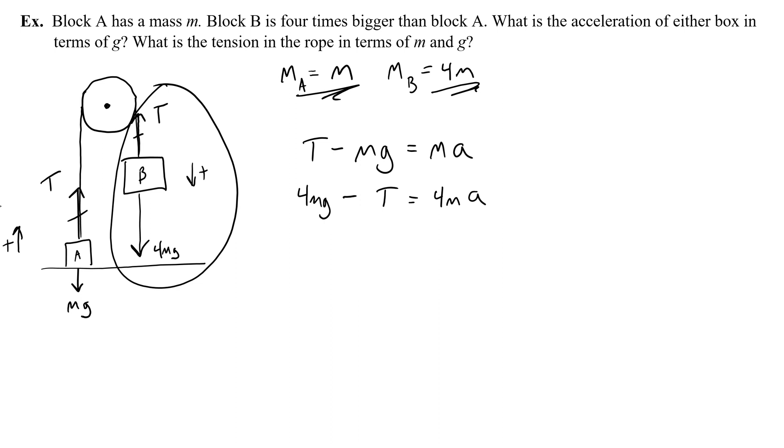So what do I do? Well, I want to find the acceleration, right? So that means I'm just going to keep chugging along and solve for A. So I solve this system by adding the left and the right sides of the equations, tension cancels, and I get 4MG minus MG equals MA plus 4MA. Now you can kind of see that it's easy to combine these things. 4MG minus MG, well that's 3MG. MA plus 4MA, that's 5MA.